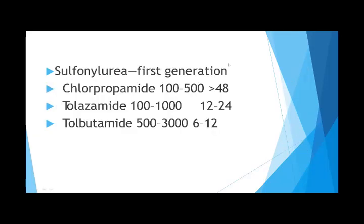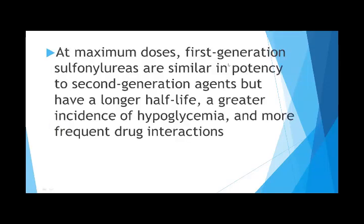Sulfonylureas are known as insulin secretagogues. There are different generations: first generation includes chlorpropamide, tolazamide, and tolbutamide. At maximum doses, first-generation agents are similar in potency to second-generation drugs but have a longer half-life, a greater incidence of hypoglycemia, and more frequent drug interactions. Because of their long half-life, hypoglycemia in a patient on first-generation agents is difficult to treat.